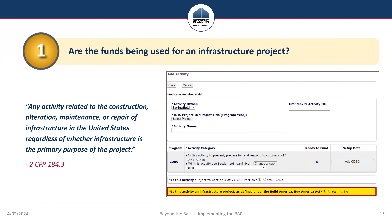Sarah explains that the term infrastructure project means any activity related to the construction, alteration, maintenance, or repair of infrastructure. Grantees will want to look for these key elements in projects, since infrastructure may include but is not limited to road and sidewalk improvements, water, sewer, and other utility enhancements, broadband infrastructure, construction or repair of public facilities, construction or repair of homeless shelters, and any other CPD-funded activities defined as infrastructure according to the Build America Buy America Act.